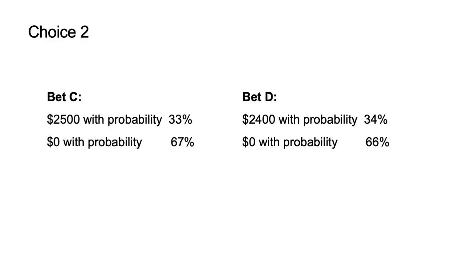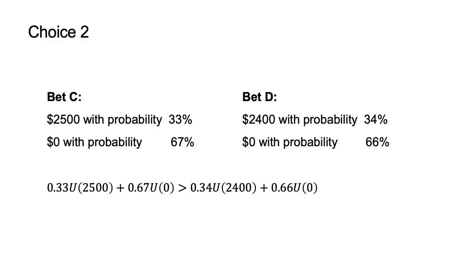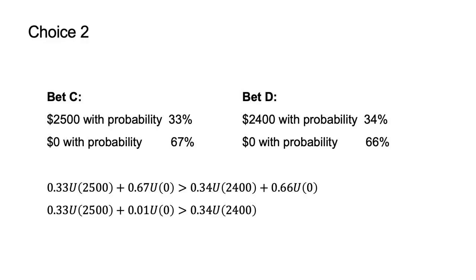We can do the same analysis with the second choice. According to expected utility theory, if an agent selects C, the expected utility of C must be greater than the expected utility of D. That is, 0.33·U(2500) + 0.67·U(0) > 0.34·U(2400) + 0.66·U(0), which simplifies to 0.33·U(2500) + 0.01·U(0) > 0.34·U(2400).